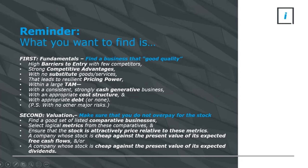Once we've found the businesses we want to be invested in, how much should we pay? We want to make sure we don't overpay for the stock. The starting point is relative valuations — find a good set of comparative businesses, select logical valuation metrics from these comparators, and compare them to the stock you're looking at. Is it cheap versus them or expensive? Then we can value it on an absolute basis: present value its expected future cash flows or expected future dividends.